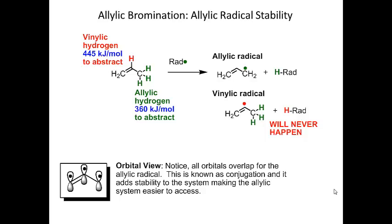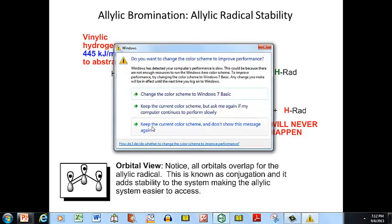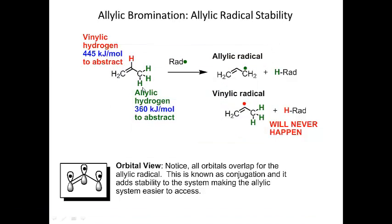You remember from our previous conversation when we talked about the allylic radical. Here's the allylic hydrogen, and here's my radical that's going to abstract that hydrogen. If this radical abstracts that hydrogen, I get the allylic radical. The vinyl hydrogen does not get abstracted — it costs 445 kilojoules per mole to abstract that hydrogen, whereas it costs 360 kilojoules per mole to abstract the allylic hydrogen. That's an 85 kilojoules per mole difference in energy, which is pretty huge.